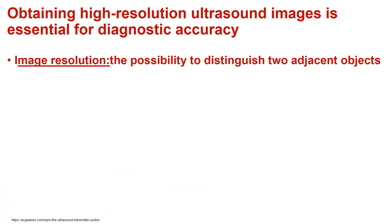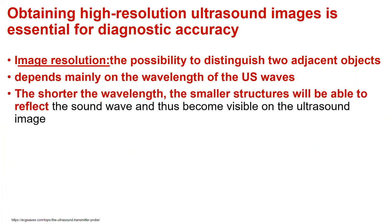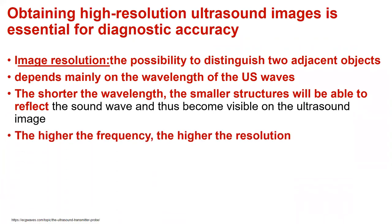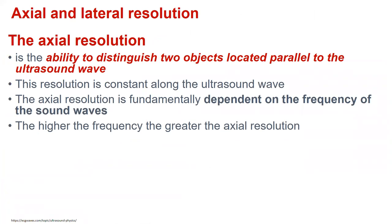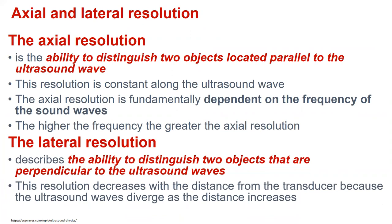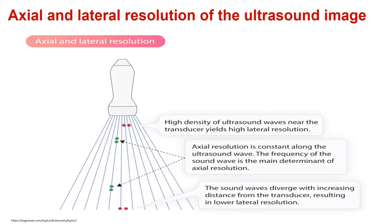To obtain the best image resolution — the best possibility to distinguish two adjacent objects — we have to have a shorter wavelength, and with that we will see smaller structures. Using a higher frequency, we can reach higher resolution. The axial resolution is the ability to distinguish two objects located parallel to the ultrasound wave, and the lateral resolution is the ability to distinguish two objects that are perpendicular to the ultrasound waves. On the upper part of the panel, you can see a high density of ultrasound waves near to the transducer, yielding high lateral resolution, and in the lower part, the sound waves diverge with increasing distance from the transducer, resulting in lower lateral resolution.